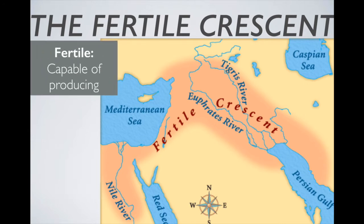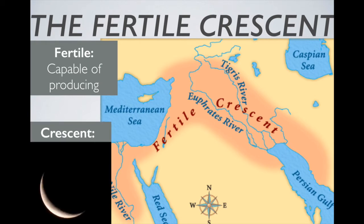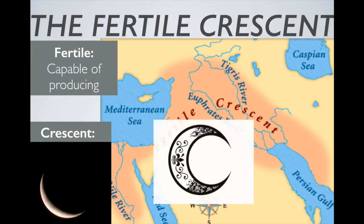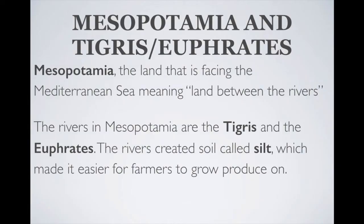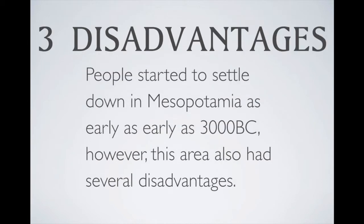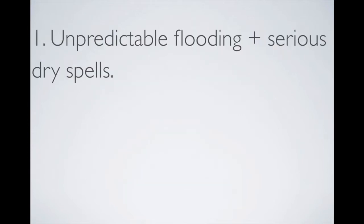It's called a crescent because of its shape — this kind of moon-like shape if you look closely. This area was important because the two rivers that flowed through created soil called silt, and the silt made it easier for farmers to grow produce.